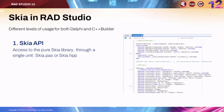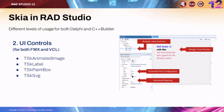How do you use Skia in RAD Studio? There are multiple ways of doing it depending on what you're looking for. One option, which is probably not the most common one I would expect, is just using the Skia API directly. The API is available through a unit, and you can really just start coding against this Skia API. There are also other and easier ways to leverage Skia in a RAD Studio application.